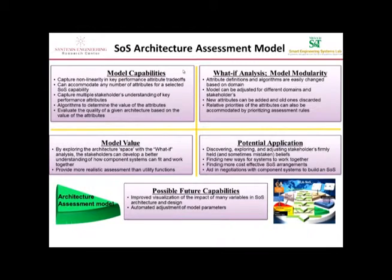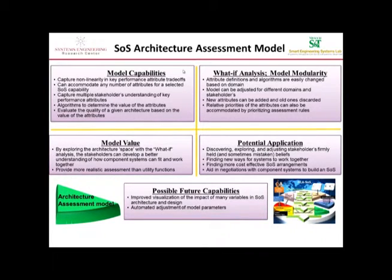So there could be attributes that have relatively little to do with the architecture — you would not use those attributes as part of this test. We can do what-if analysis, we can change assumptions, we can look at other outside influences, we can change cost models, things like that. And because they're modular algorithms for each of the attributes, you can change them up, move them around, and I'll show you a number of ways that we do that.